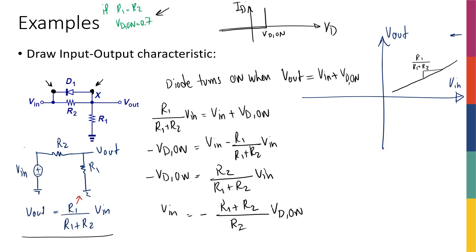So V_in is equal to negative (R1 + R2)/R2 times V_D_on. Looking at these numbers, when R1 equals R2 and V_D_on equals 0.7, V_in becomes negative 2 times 0.7, so negative 1.4. At that point V_out is negative 0.7, which is 0.7 volts more positive than V_in of negative 1.4 — so the diode turns on. This line continues until V_in reaches negative (R1 + R2)/R2 times V_D_on.